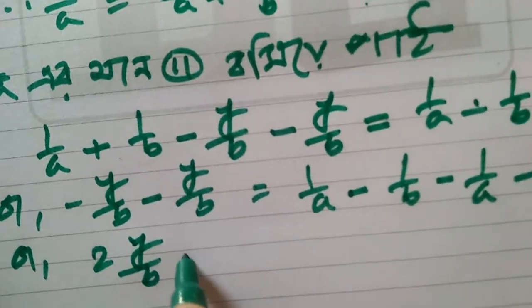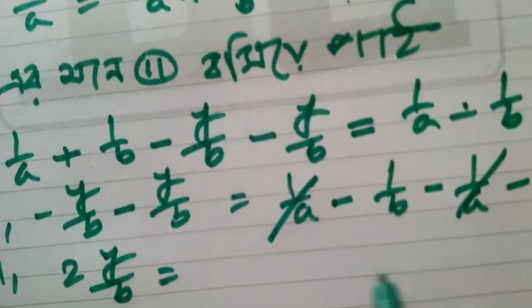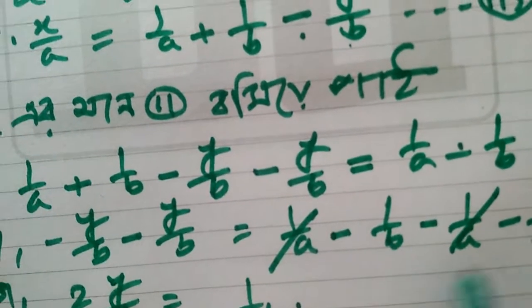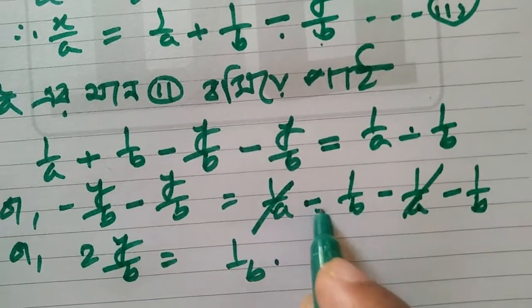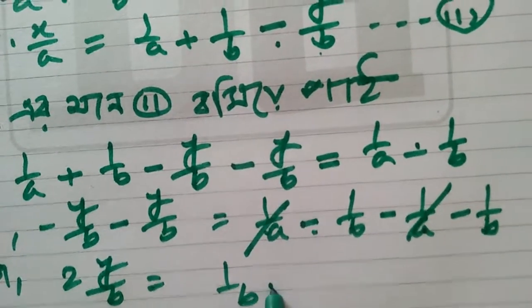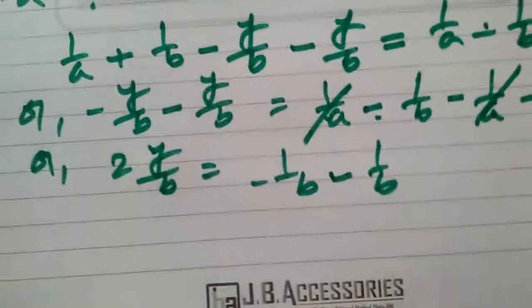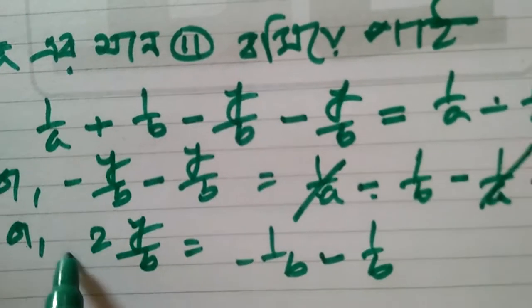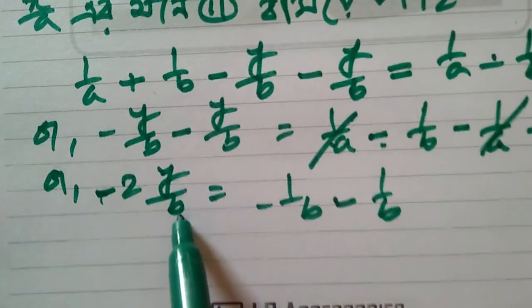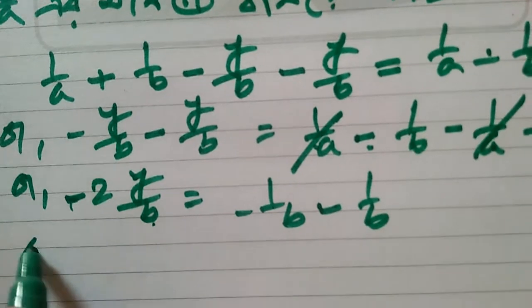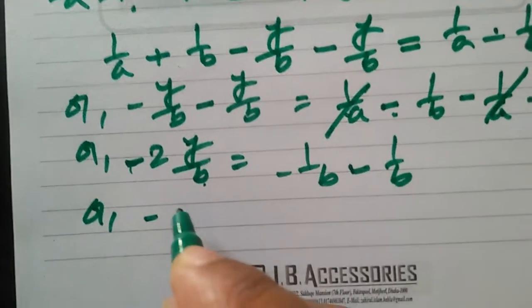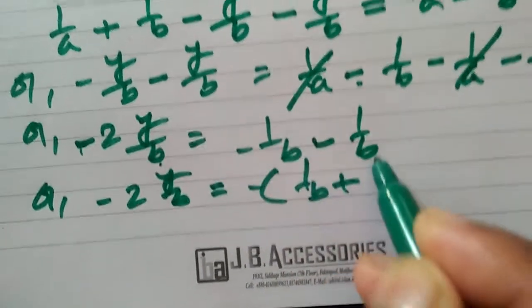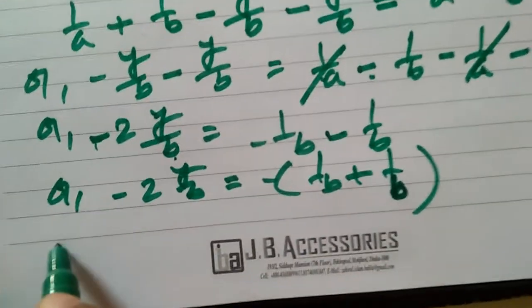2y by b is equal to 1 by b plus 1 by b. We can write a minus, so minus 2y by b — we can write a 2 common — and 2y by b is equal to 1 by b plus 1 by b.